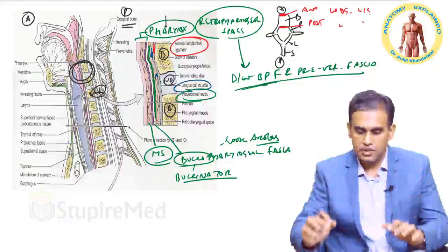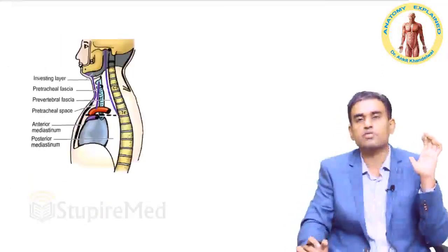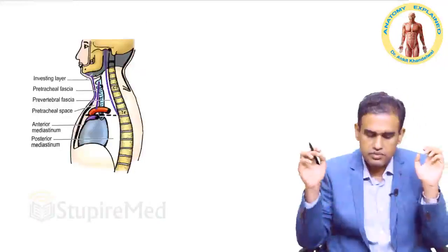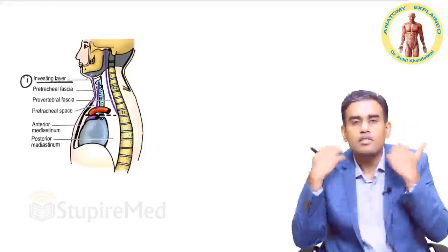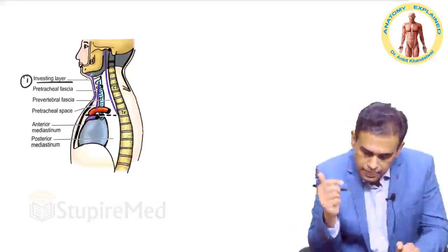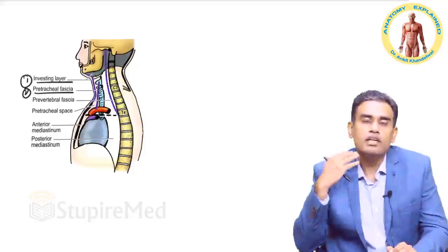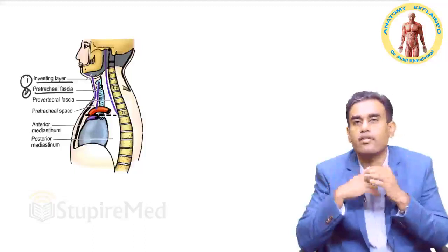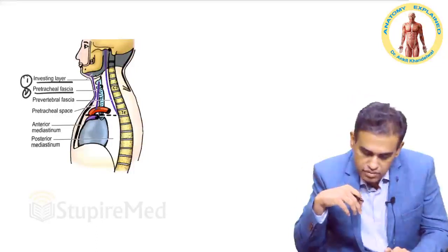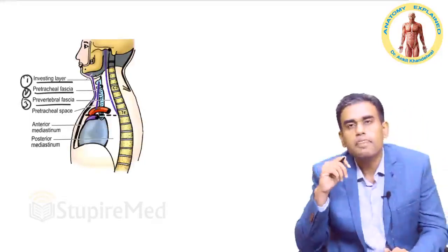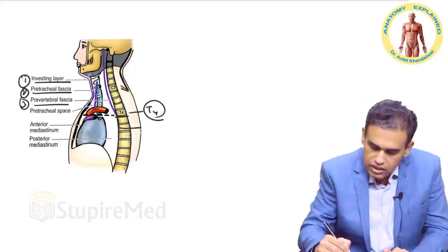The next figure shows all the spaces and their extensions — a very important sagittal view. Trace all the layers: number one is the investing layer investing the whole neck region like a collar; number two is the pretracheal fascia, superiorly not even reaching the hyoid, around the thyroid cartilage, and inferiorly merging with the adventitia around the arch of aorta; number three is the prevertebral fascia, whose lowest extent is around T4 where it fuses with the anterior longitudinal ligament.